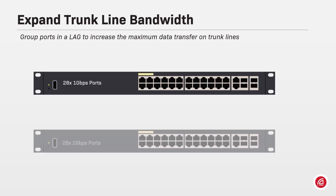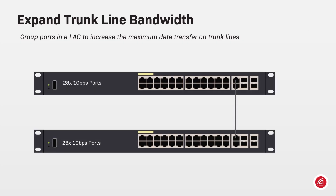Working on the edge of the maximum speed of a cable is risky. To avoid data loss, it's possible to expand the trunk line bandwidth with a link aggregation group. A LAG is a group of ports that will logically behave as one. When configured to work as a single trunk line, the total bandwidth of the LAG will be the sum of both ports' data transfer speeds — in this case two 1 Gigabit ports grouped as a 2 Gigabit trunk line.